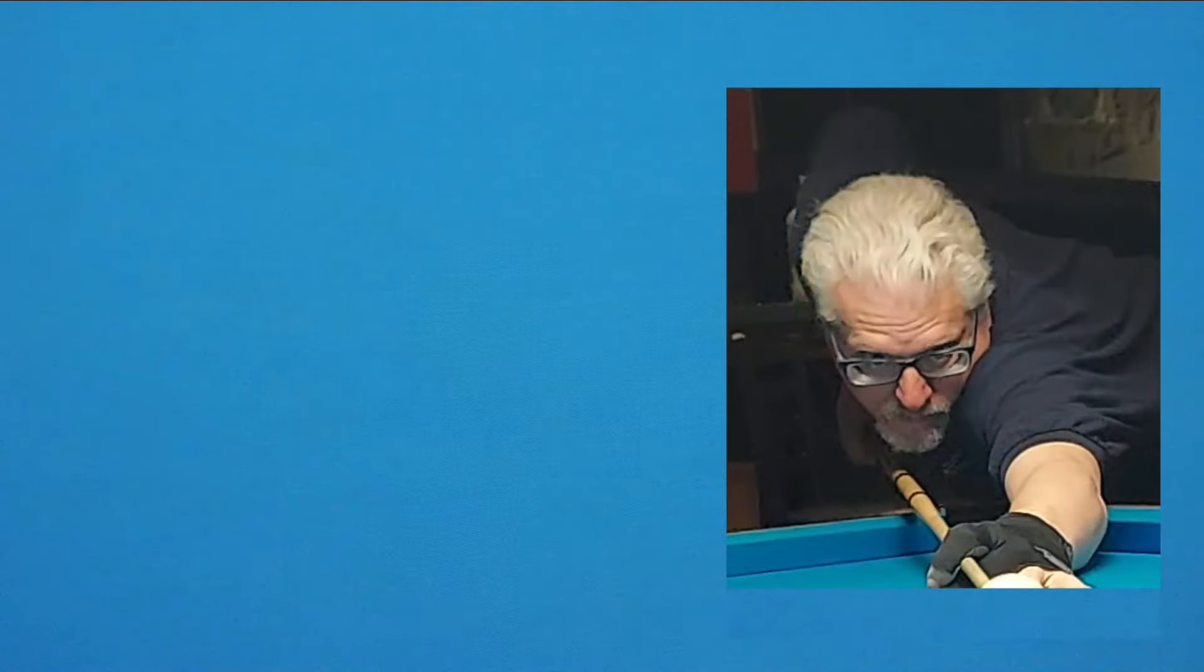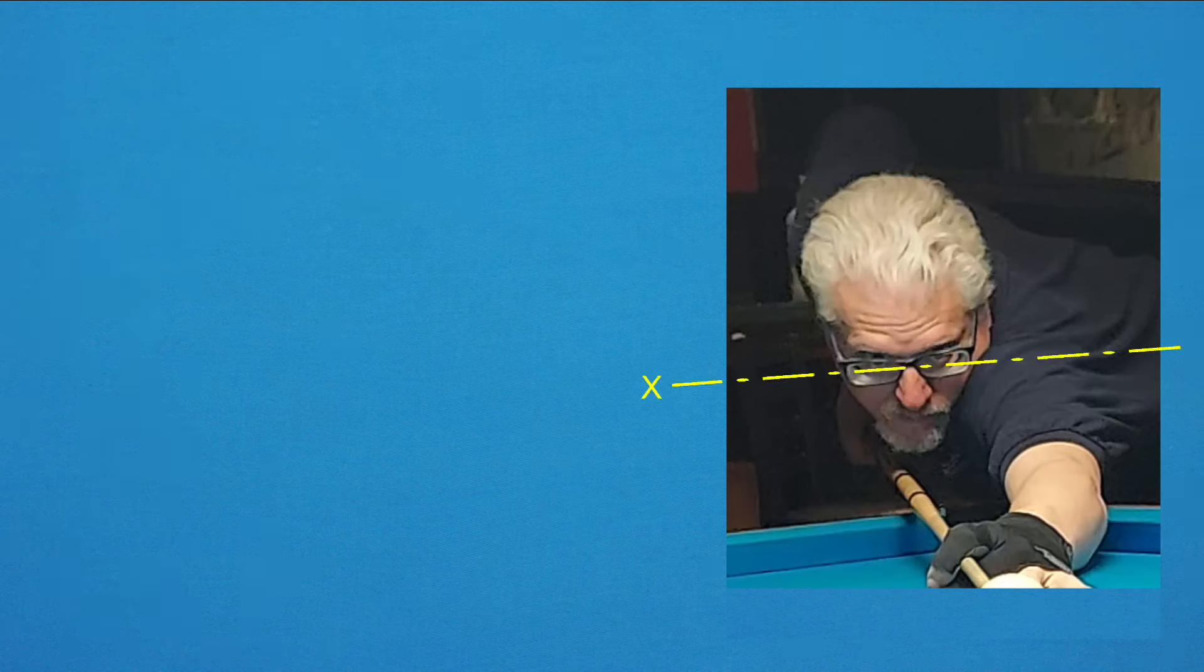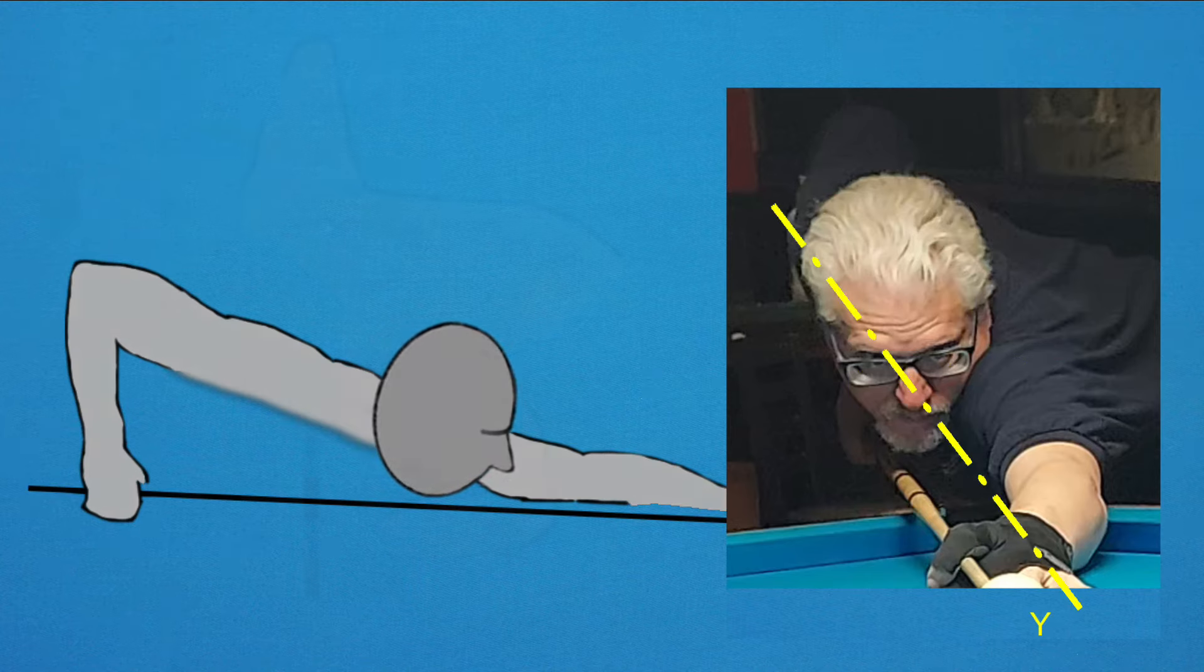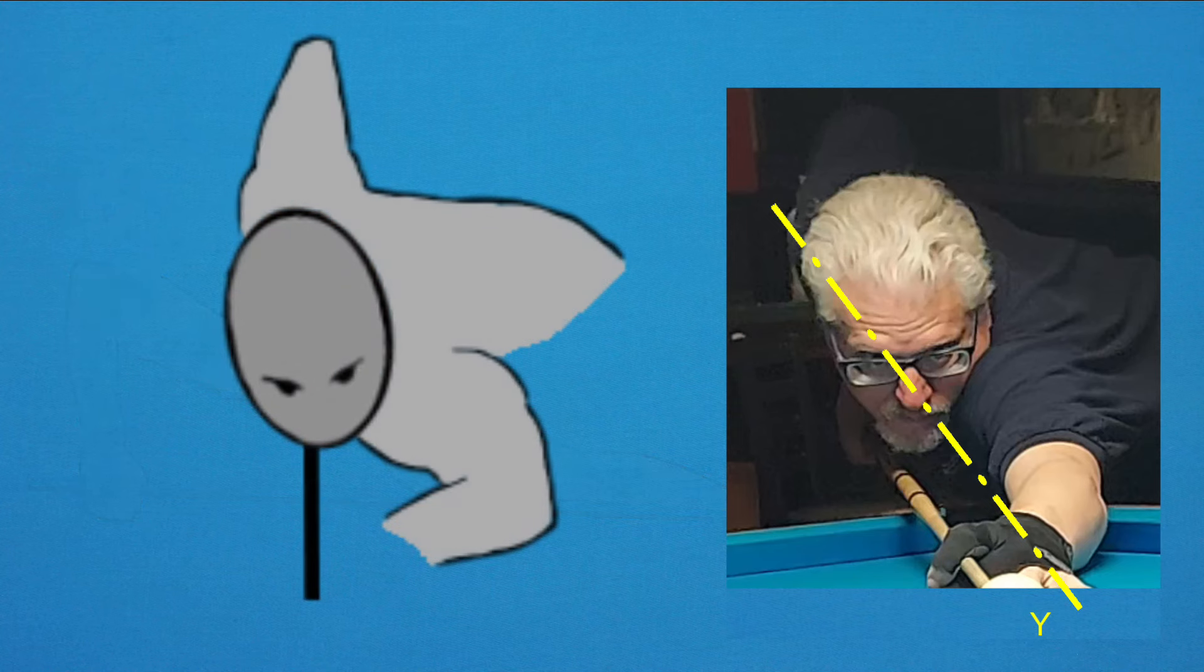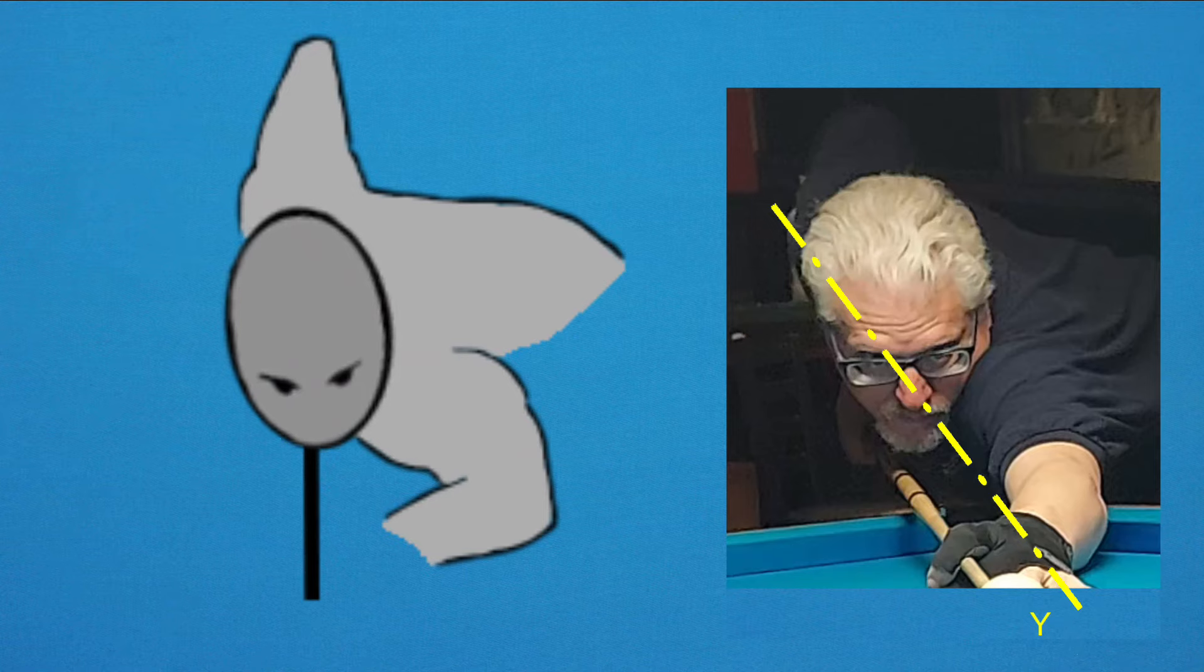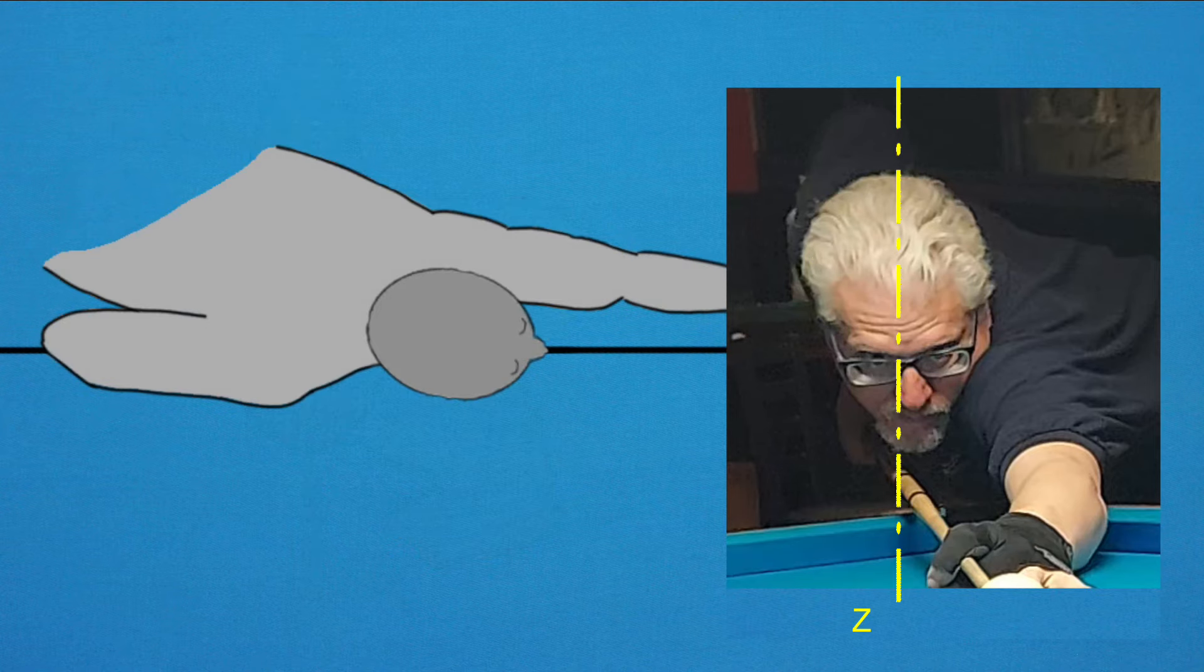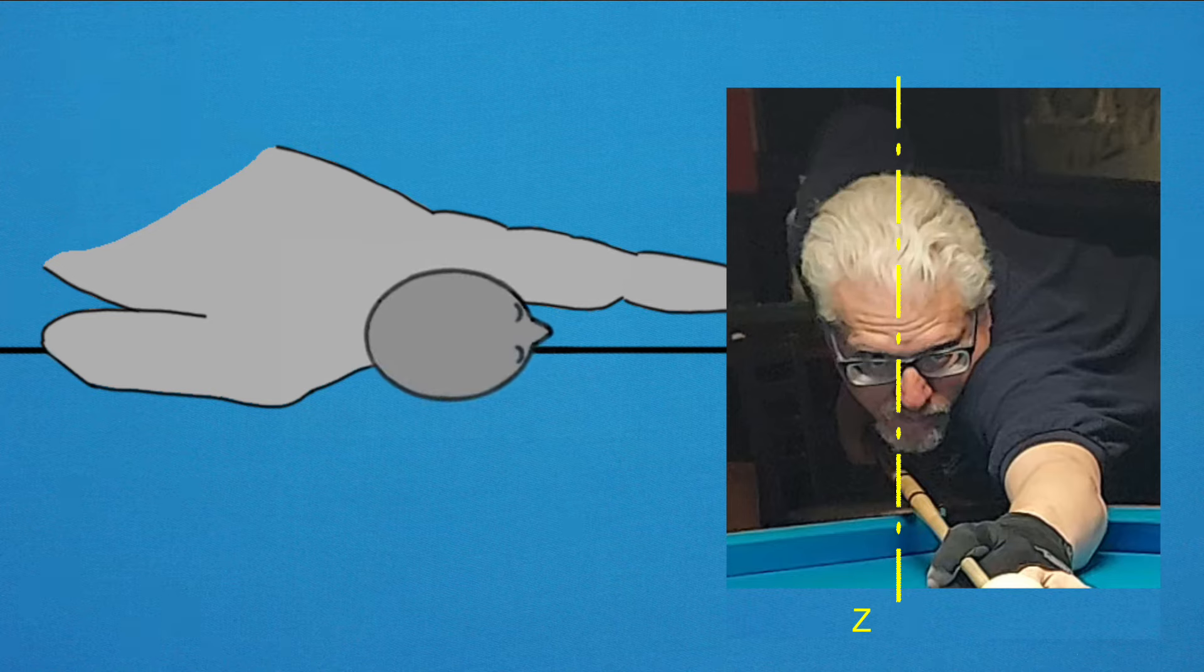One way to think about it is the human head can rotate on three axes. The x-axis is perpendicular to the shot line. Rotating your head around the x-axis causes your eyes to look up or down. The y-axis is parallel to the shot line. Rotating your head around the y-axis adjusts the level of your eyes in relation to the pool table, and the z-axis points to the ceiling. Rotating your head around the z-axis turns your verge, or vision direction, onto or away from the shot line.